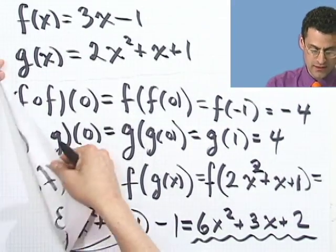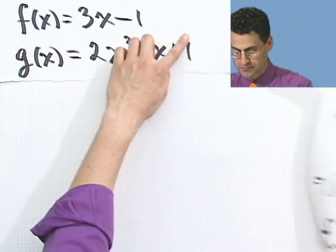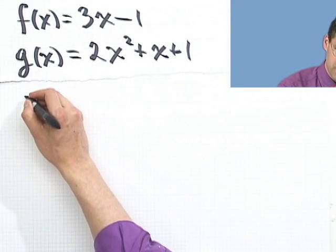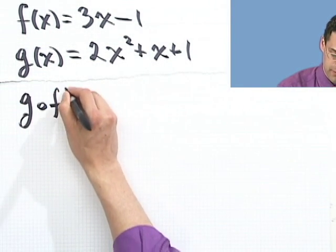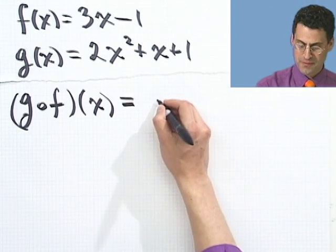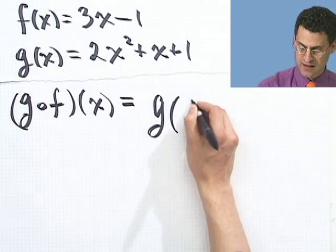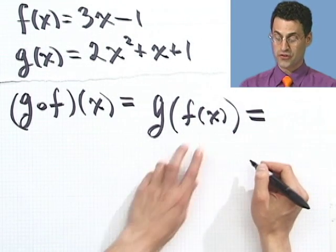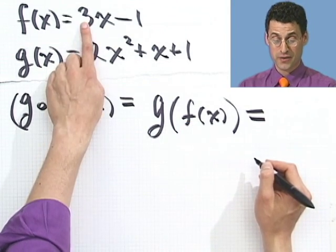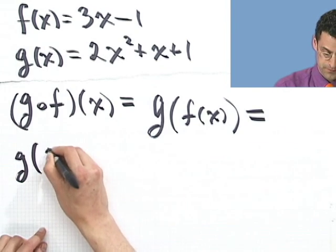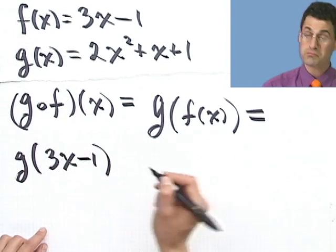So if I do that, let's see what happens. So we just did f composed with g, let's do g composed with f. What does that mean? Well, that means that g is on the outside, and first I do f. So what is f of x? Well, f of x is 3x minus 1. So I put that in right here. Great.